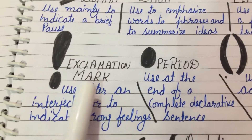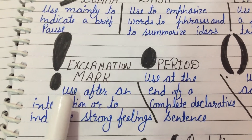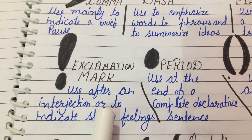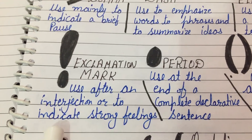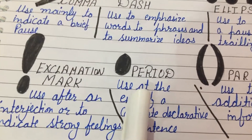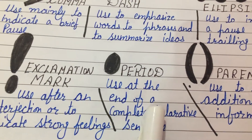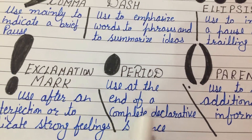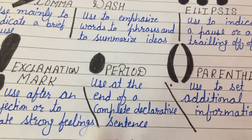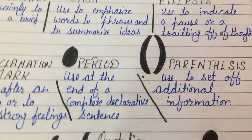And next one, exclamation mark, used after an interjection or to indicate strong feelings. And this is a symbol of period, used at the end of a complete declarative sentence.